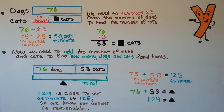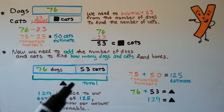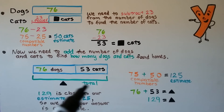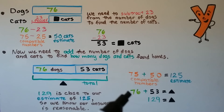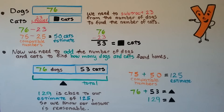Now we need to add the number of dogs and cats to find how many found homes. We have 76 dogs and 53 cats, and our black triangle is going to be equal to the total of the dogs and cats. We can use compatible numbers to make an estimate: 76 is close to 75 and 53 is close to 50, so 75 plus 50 is equal to 125 for our estimate. We do our addition: 76 plus 53 is 129, equal to the black triangle, which is close to our estimate of 125, so we know our answer is reasonable.